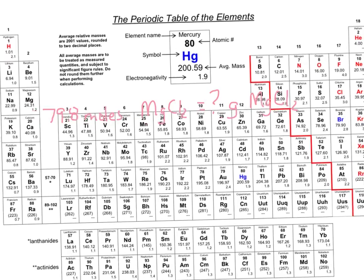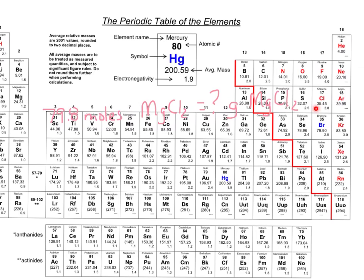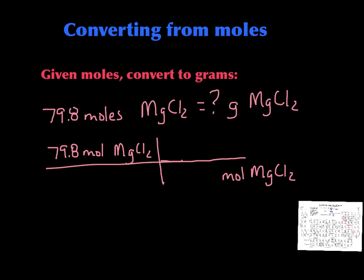There's 1 Mg, so we'd have 24.31. And here's chlorine right over here, so we have 35.45, but there are two of them. When we go to figure that out, we would just calculate that molar mass and set up the action line. This is what that action line would look like — we'd start with moles, put on the bottom of the next one moles of MgCl₂, and then we can go to grams of MgCl₂.